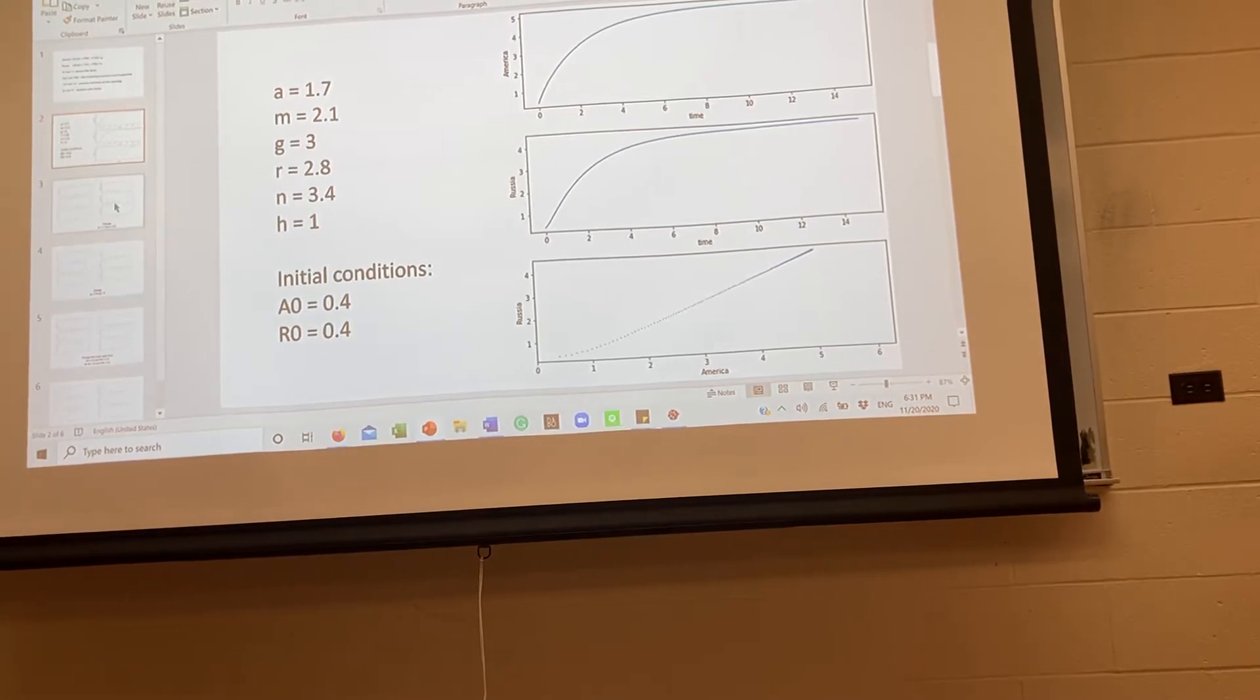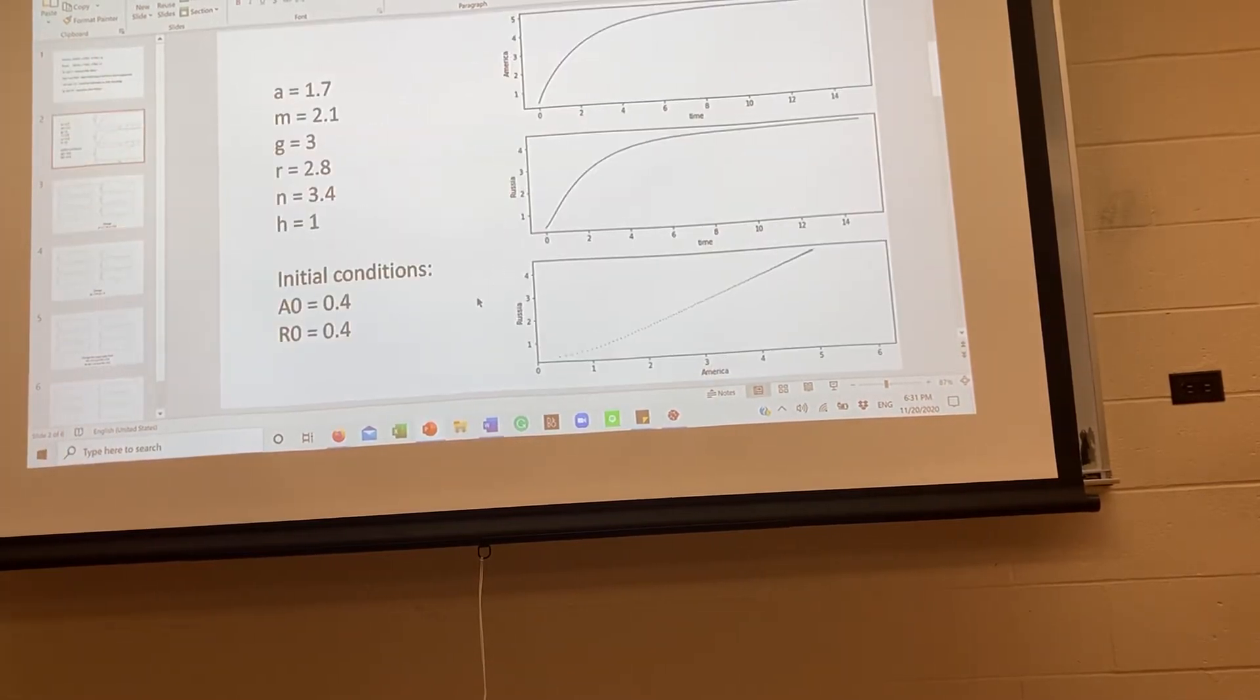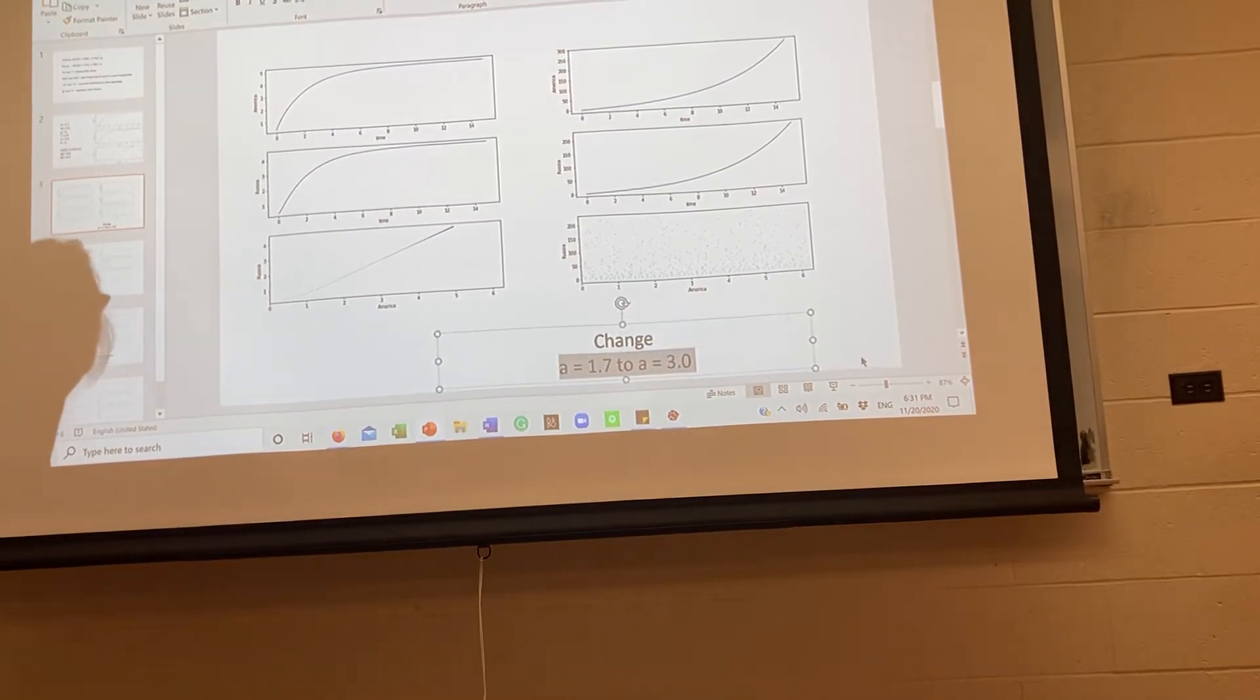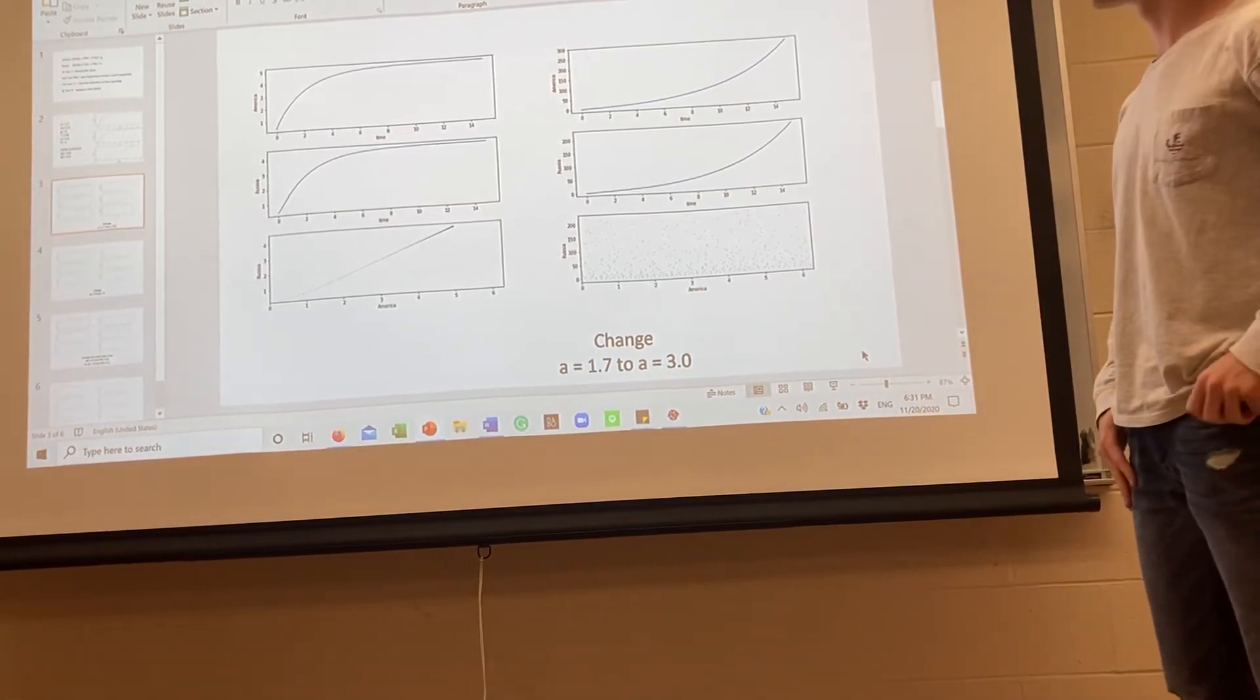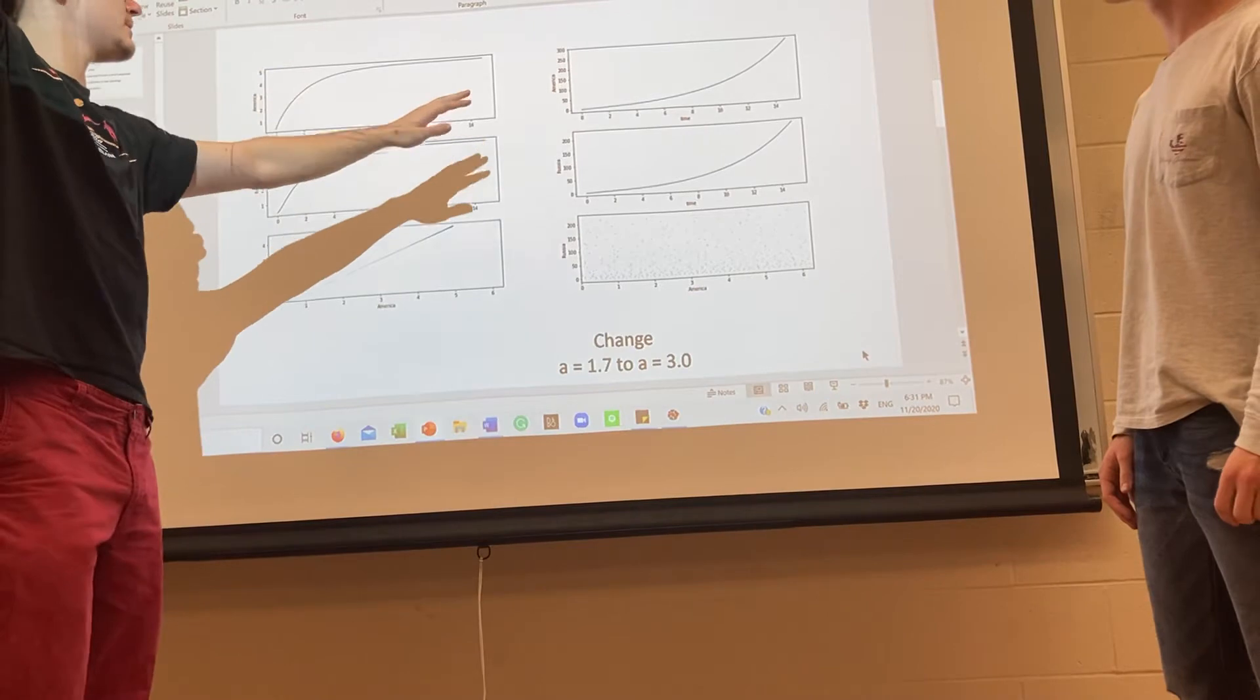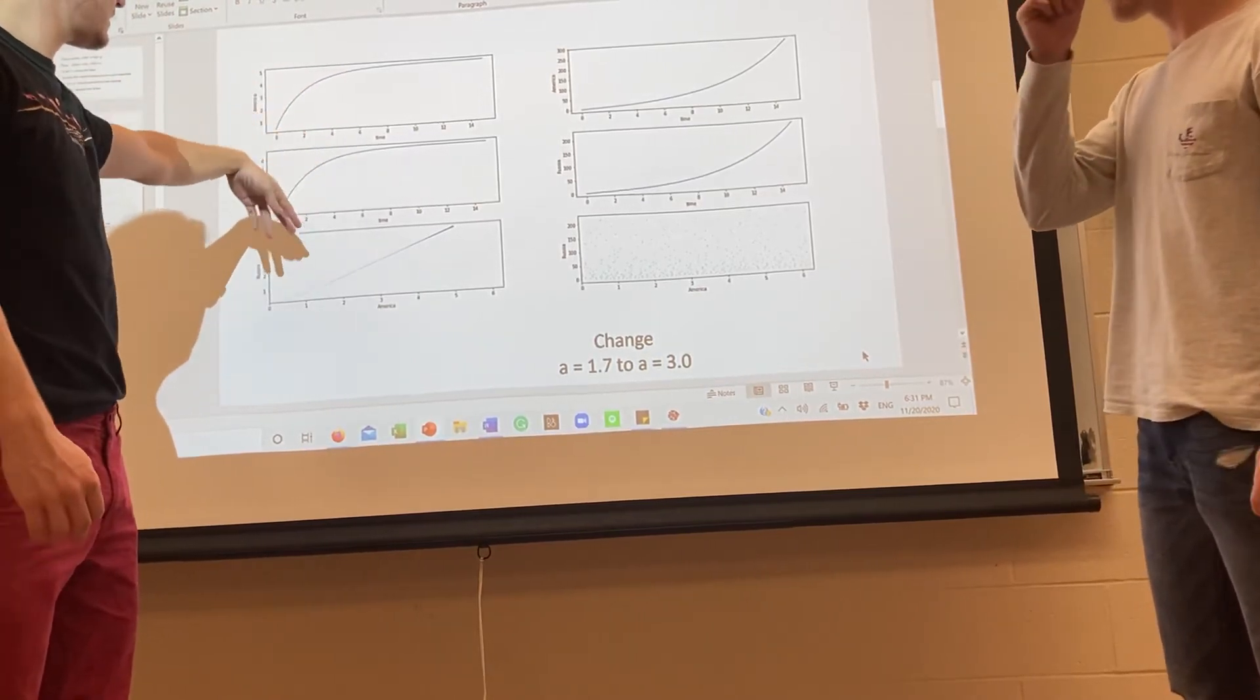After that, we changed it a little bit. From here, America's fear factor was 1.7 and we changed that to just significantly increased it to three. It's just somehow above, I think Russia was pretty close to it and we made America's go more, just increase it and we want to see what happened. Just having a little more reaction to it could just lead to such extreme circumstances where they're exponentially growing at a really fast rate.